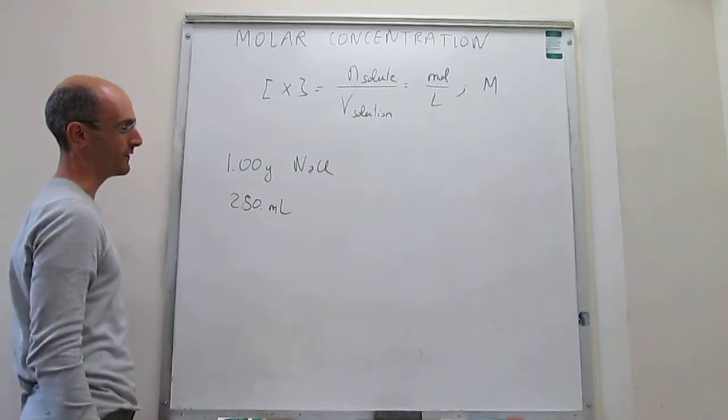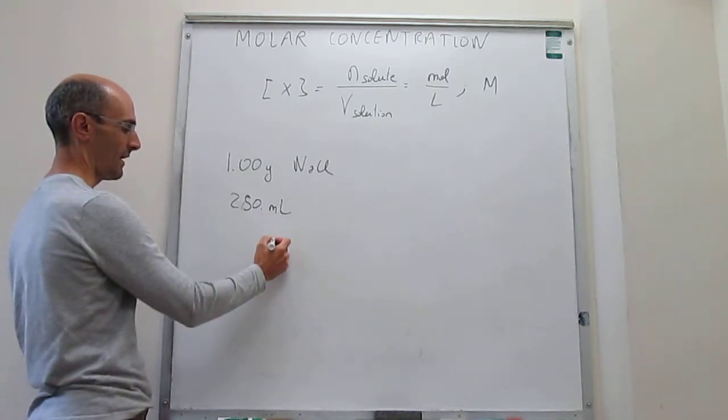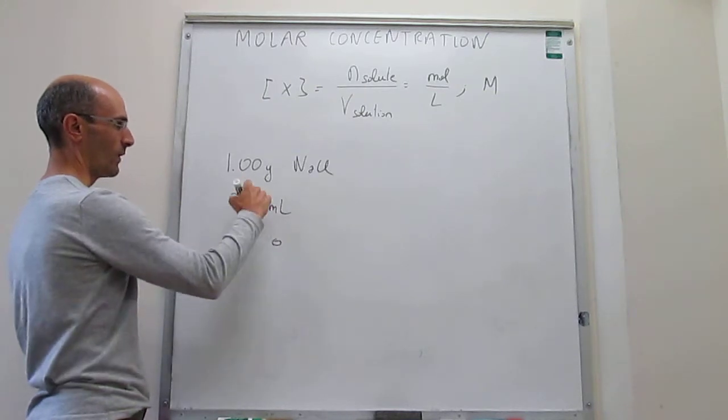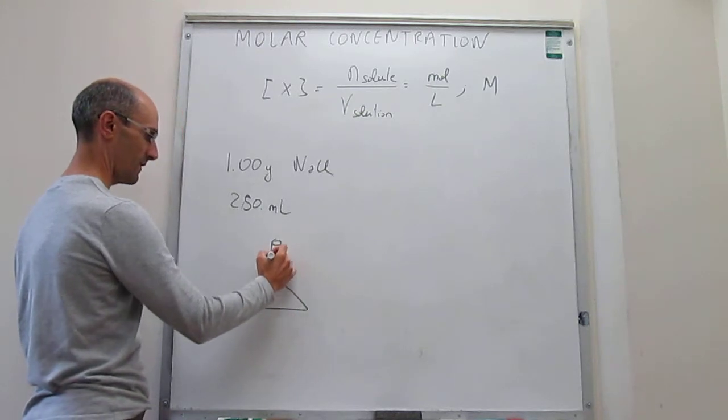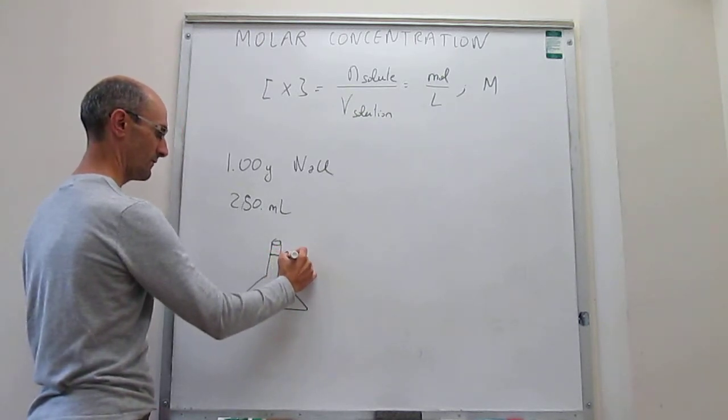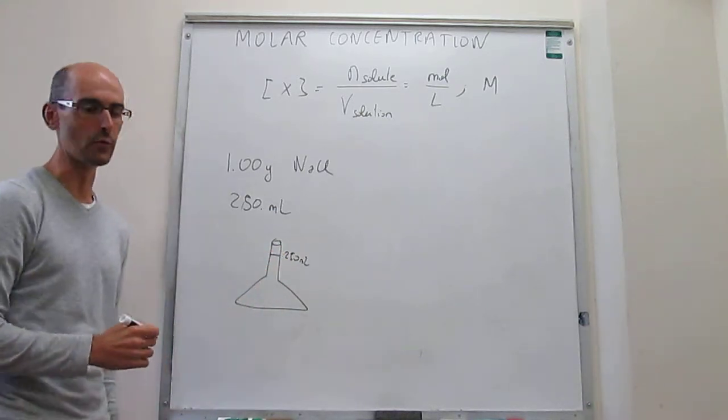So the way that you do this is you would go to the balance and then weigh out one gram of sodium chloride, and then you would go to a volumetric flask and then fill to the 250 milliliter level, and you have learned how to do that in the laboratory.